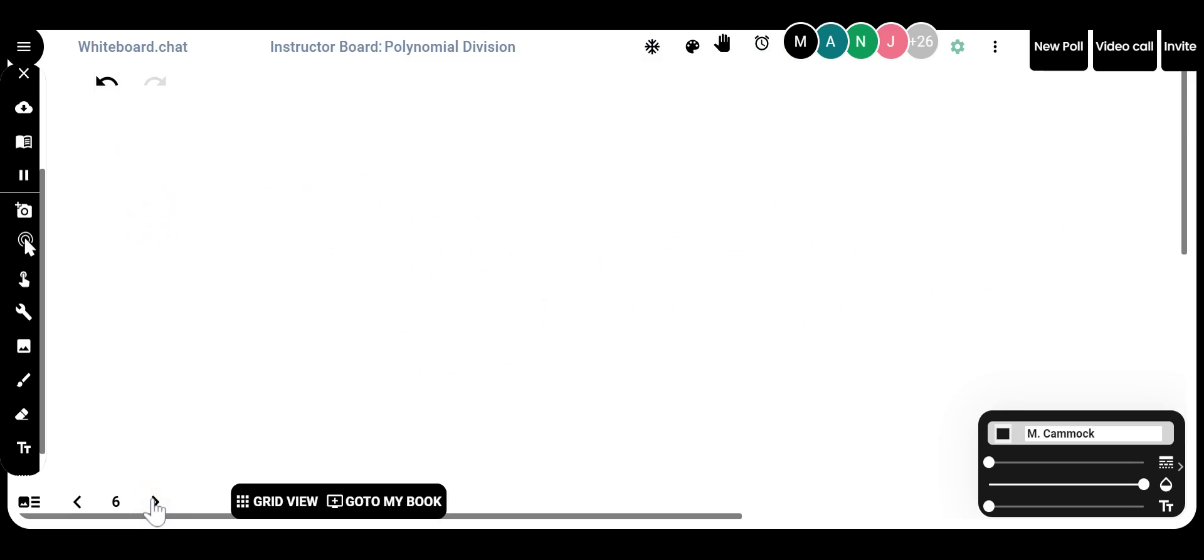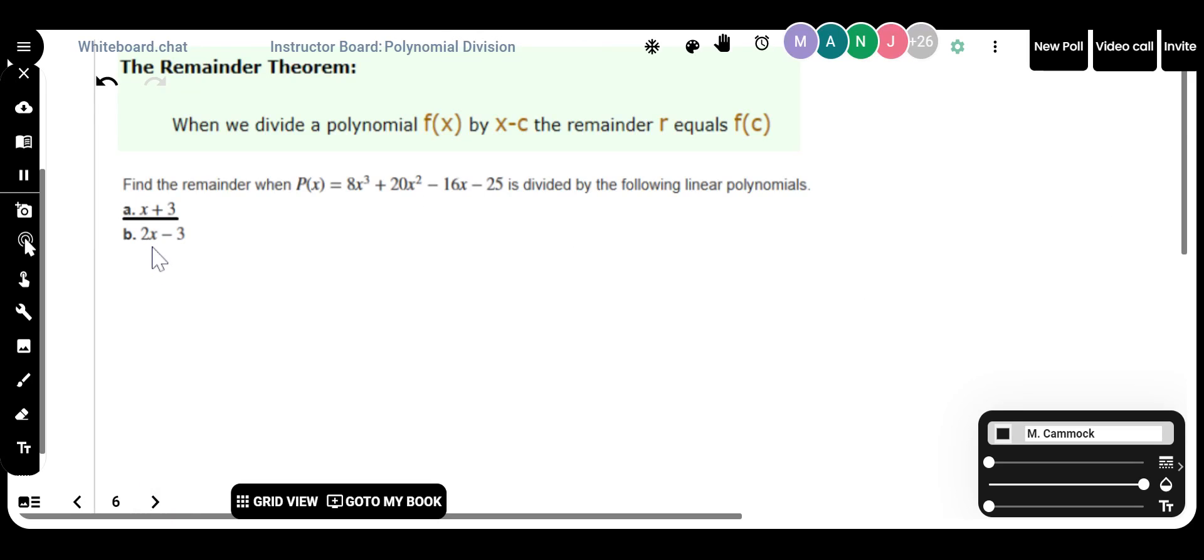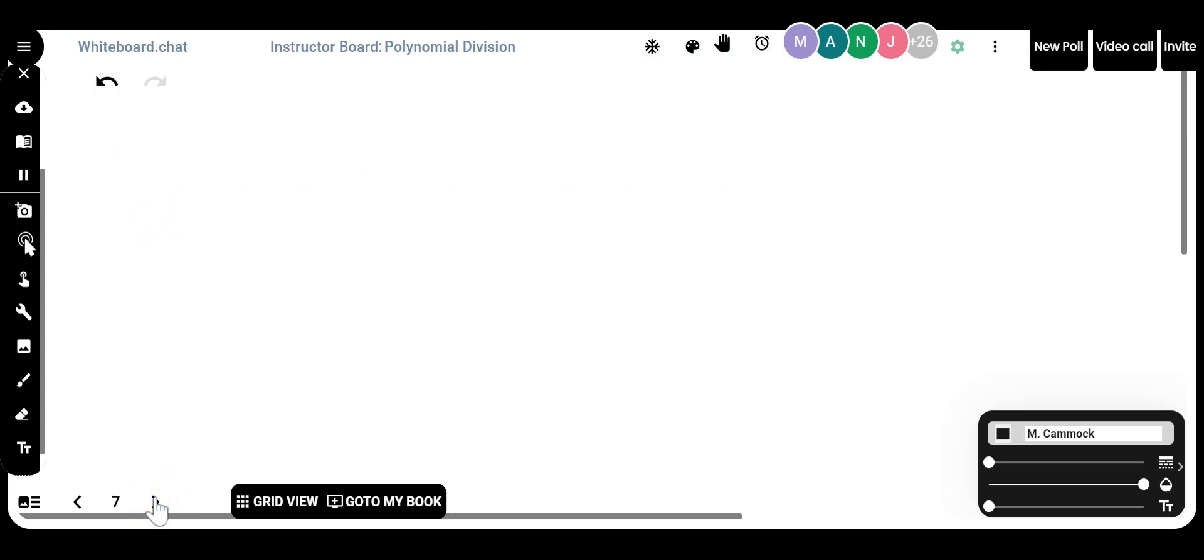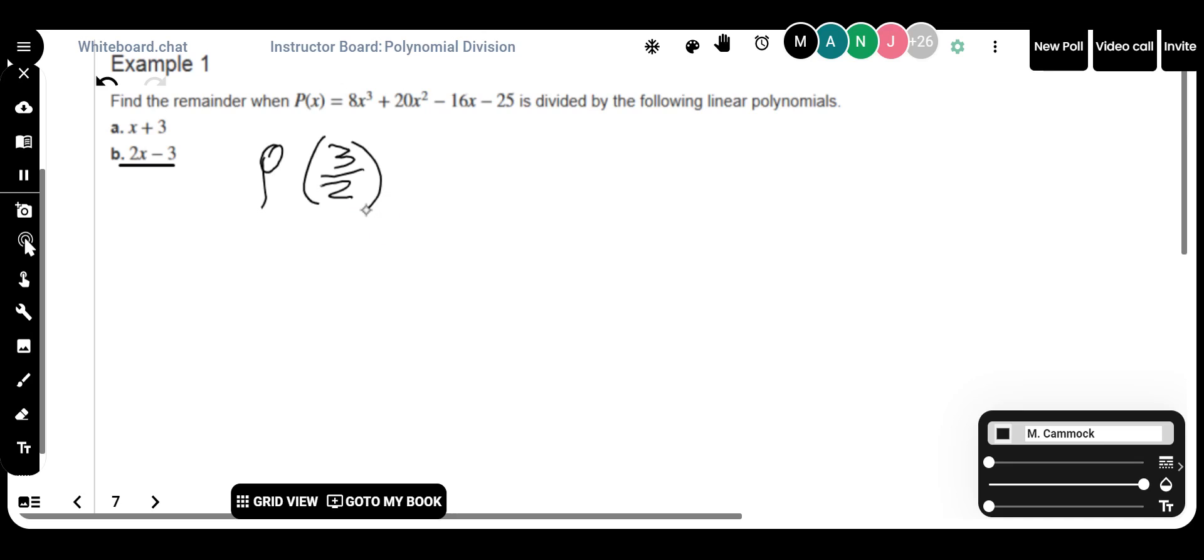Let's try this again. This is the one we need to be doing. 2x minus 3 this time. So it's the same function, but now I'm dividing by 2x minus 3. What am I plugging into the function this time? I'm plugging in the 3 over 2. Good. Because that's what makes the divisor equal to 0, it's a restriction. Does 3 over 2 make sense? I just want to be sure we're not just throwing stuff on the board. Everybody's okay with that.